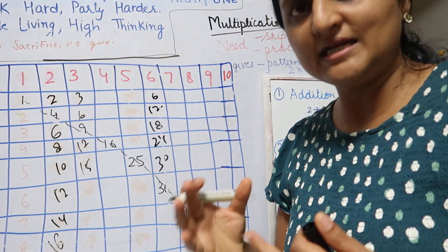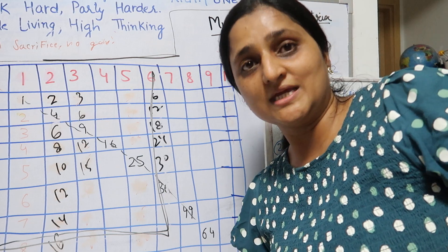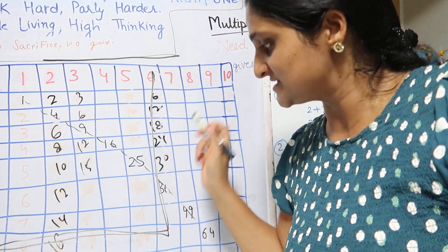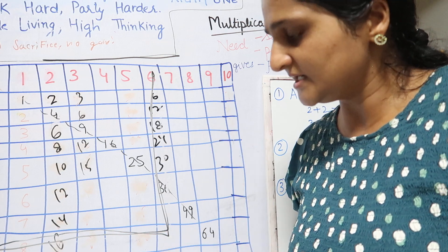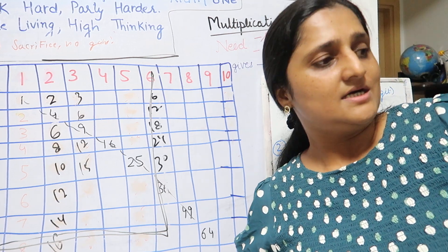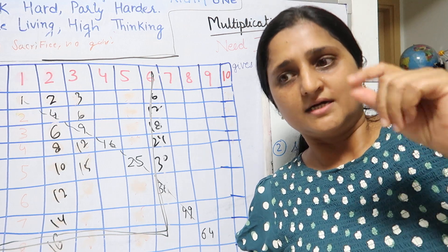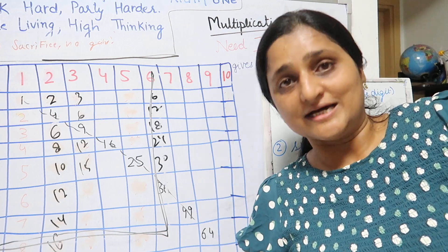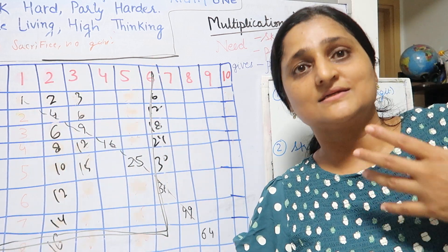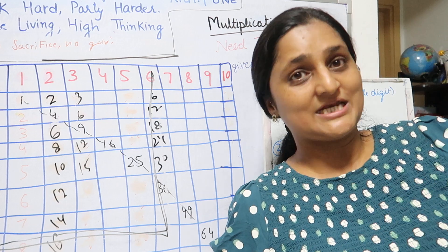Eight times six — we also get the concept that eight times six is the same as six times eight. That is the commutative law — I don't remember the exact name but the basic concept is there. We make this table again and again, look at it again and again, and try to find solutions from it. In my elder one's case, I've seen her writing the skip counting of eight and nine on the side of her workbook when she needs it, but for all other numbers she remembers.